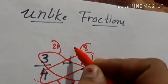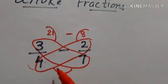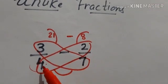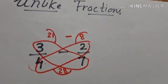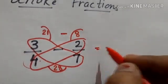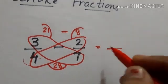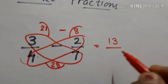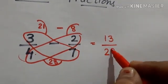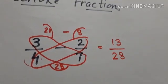And in between, whatever the sign. And then I'll multiply these two: 4 into 7 is 28. Now the answer for this is 21 minus 8 is 13, and denominator is 28. This is the butterfly method to solve the unlike fractions.